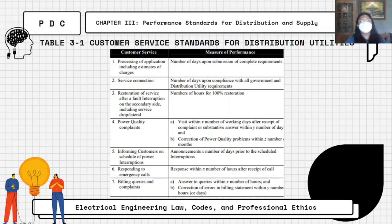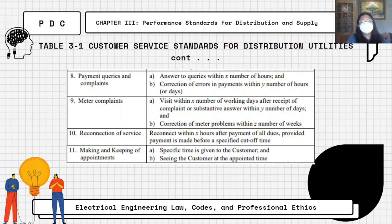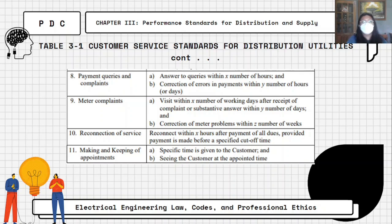Continuing Table 3.1: number eight, payment queries and complaints — answer queries within X number of hours and correction of errors in payments within Y number of hours or days. Nine, meter complaints — visit within X number of working days after receipt of complaint, substantive answer within Y number of days, and correction of meter problems within Z number of weeks. Ten, reconnection of service — reconnect within X hours after payment of all dues, provided payment is made before a specified cut-off time. Eleven, making and keeping of appointments — a specific time is given to the customer and the customer is seen at the appointed time, which is especially important during the pandemic.